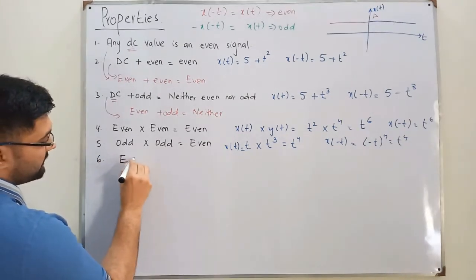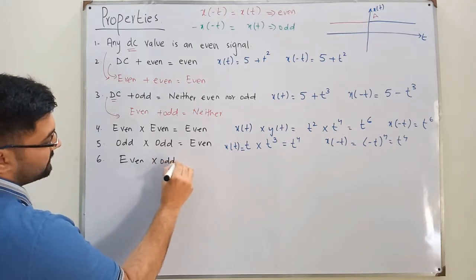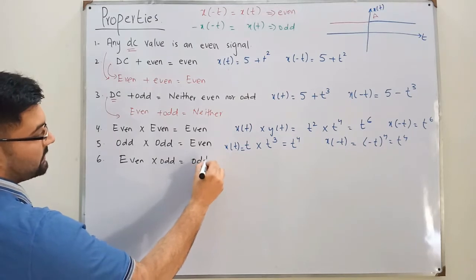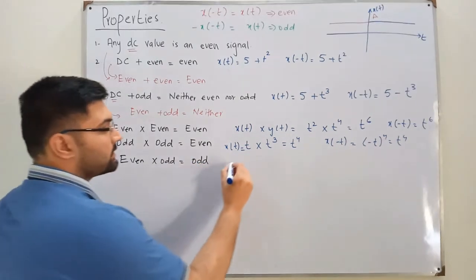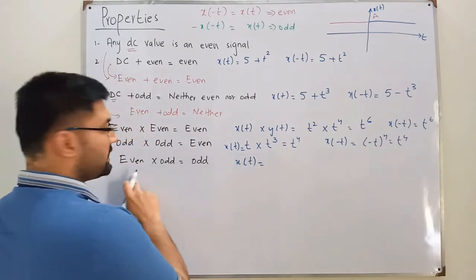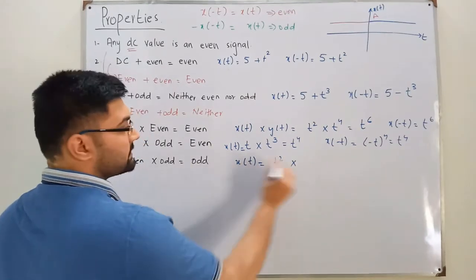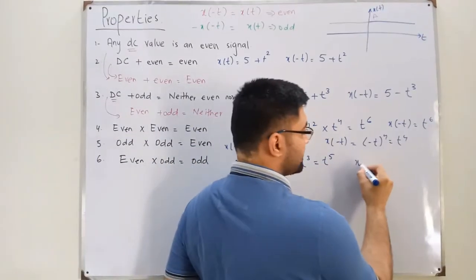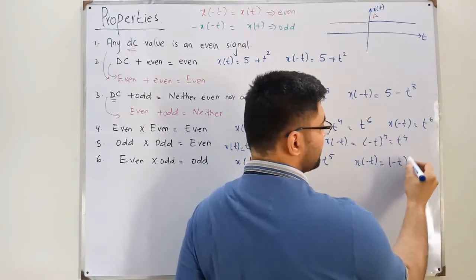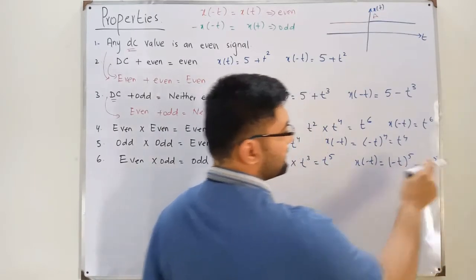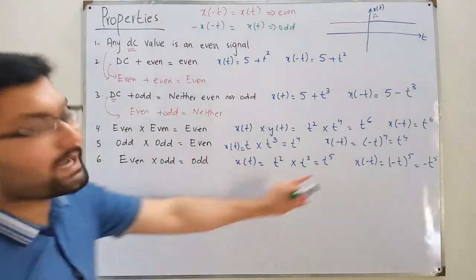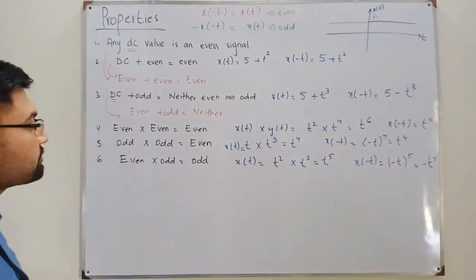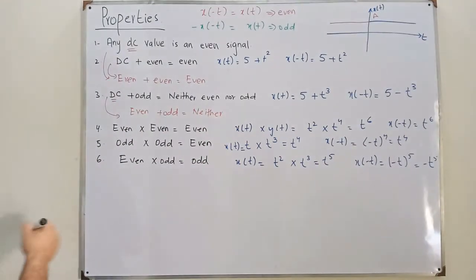The sixth property: even multiplied by odd is an odd signal. Let's say even is t² and odd is t³; multiplied together gives t⁵. Time-reversing gives X(-t) = (-t)⁵ = -t⁵, which equals -X(t). So X(t) equals negative times X(-t), confirming this is an odd signal.